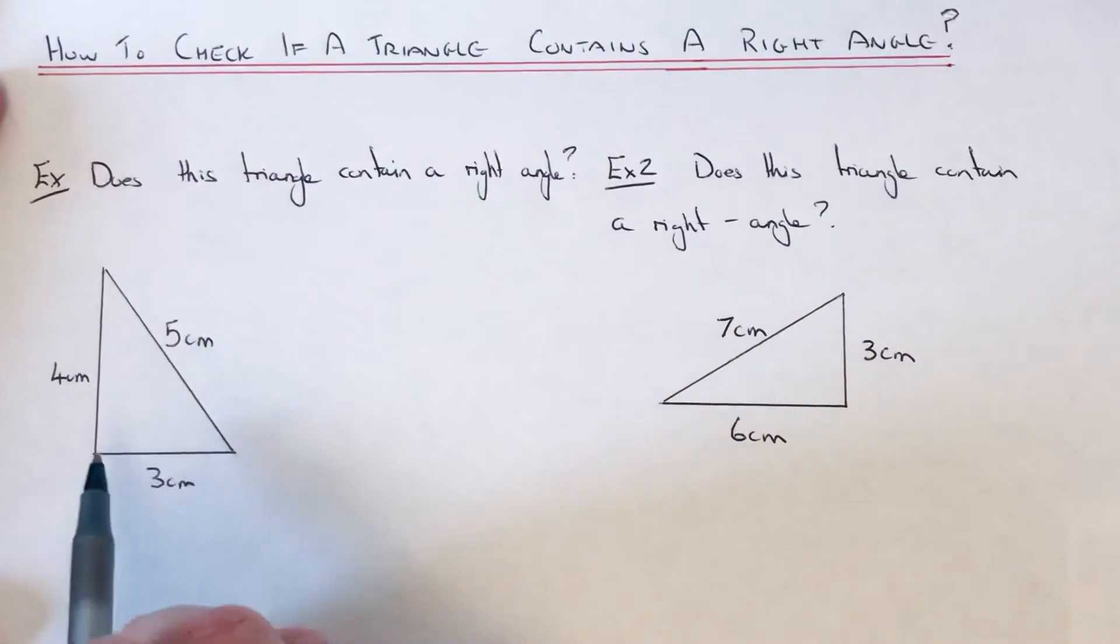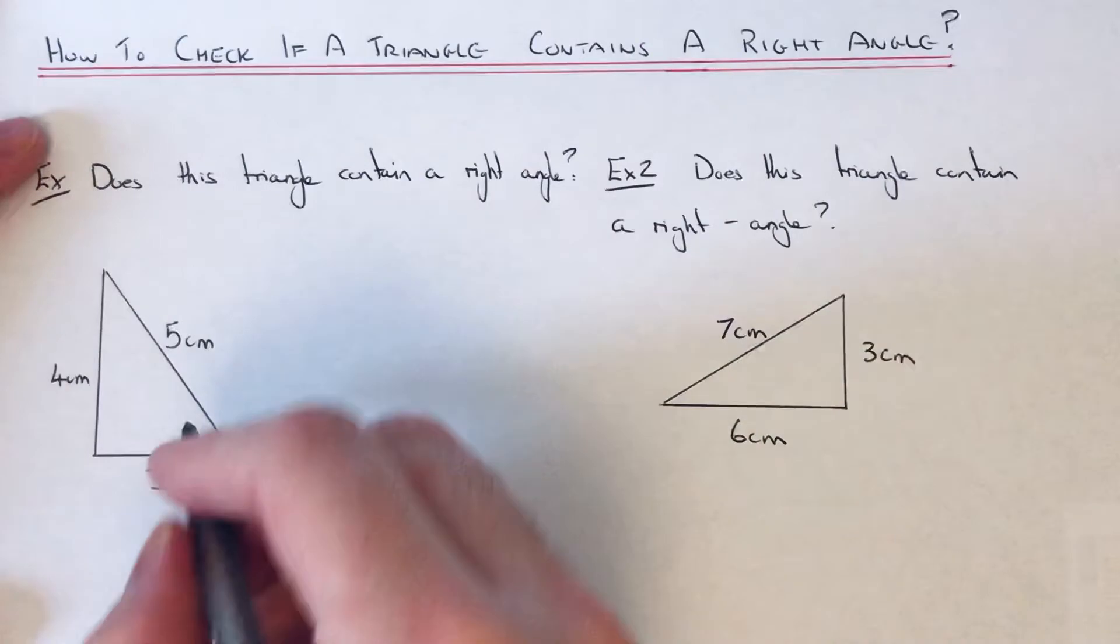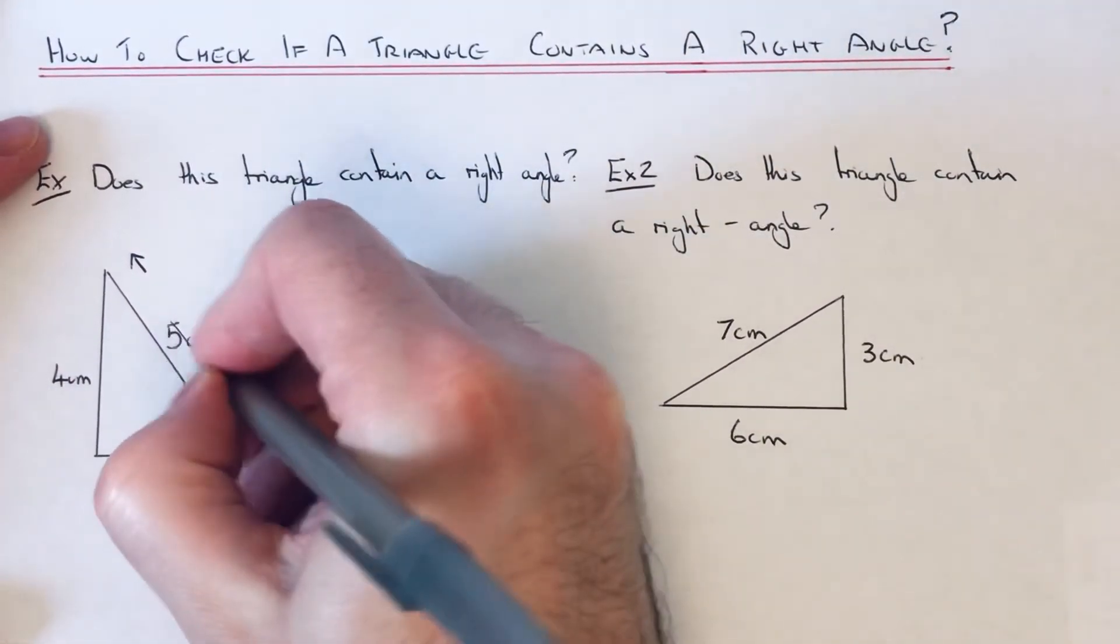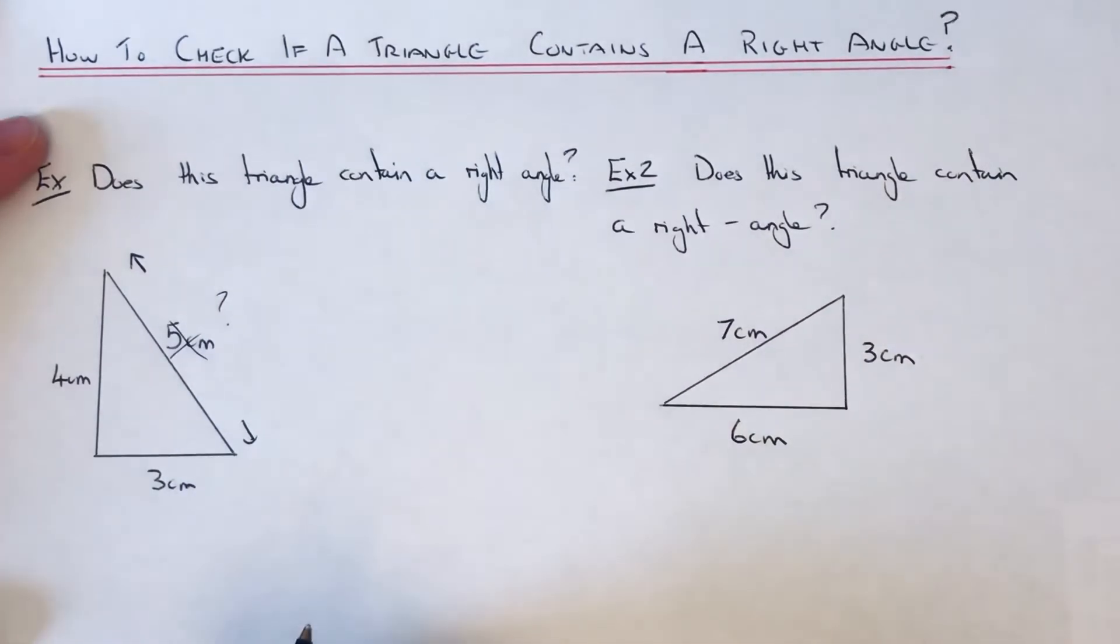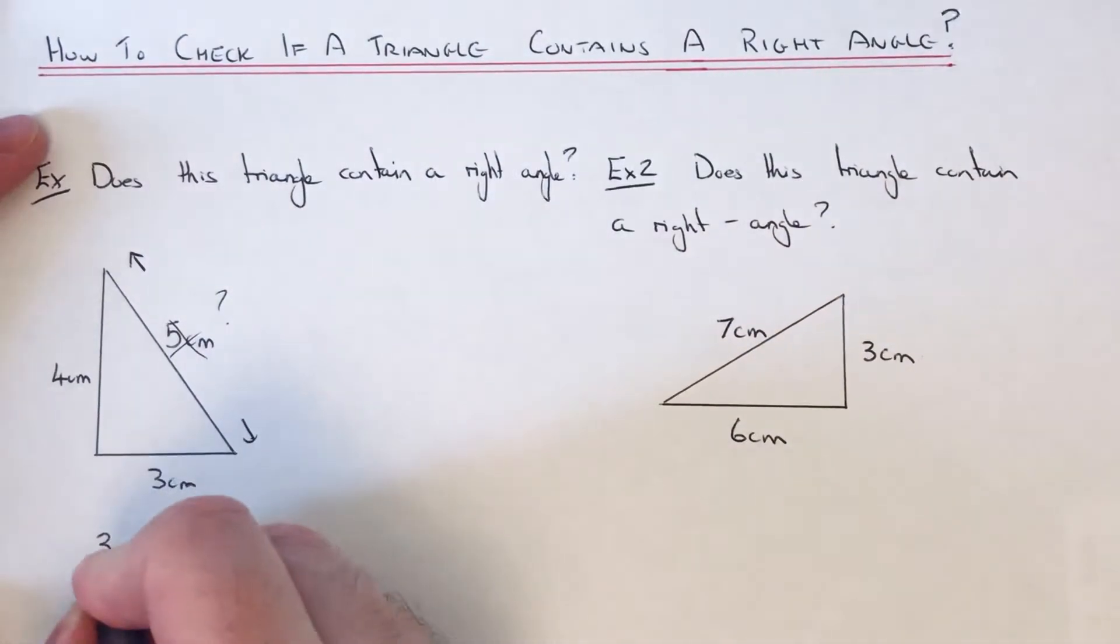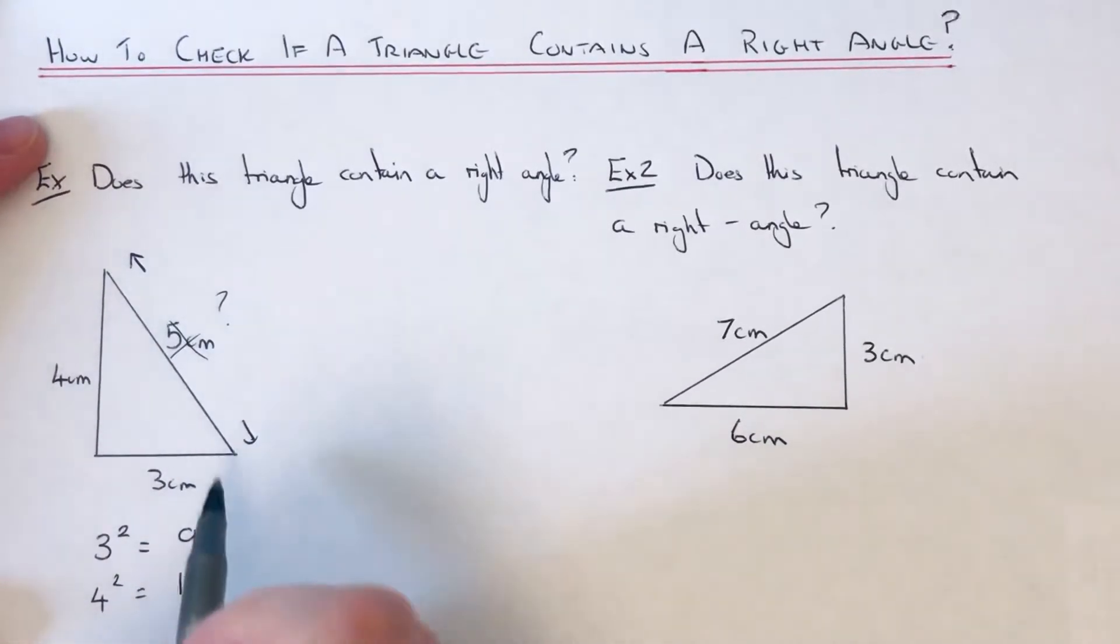We're actually going to work out what this side would be doing Pythagoras. So if we go 3 squared, 3 squared is 3 times 3, which is 9. 4 squared, which is 4 times 4, which is 16.